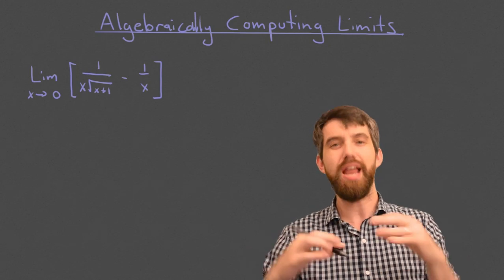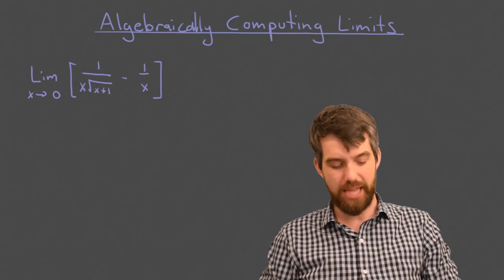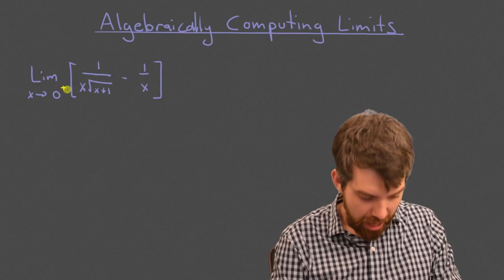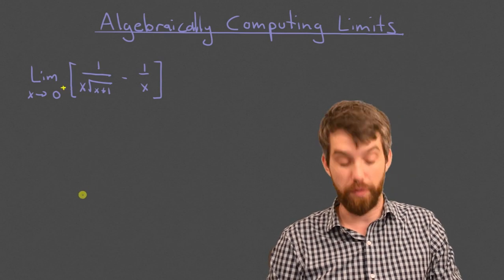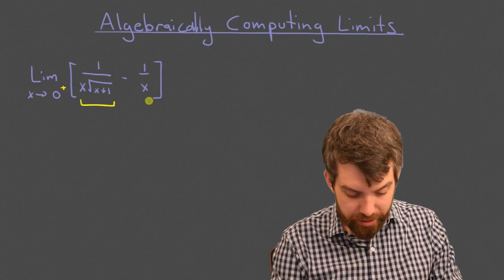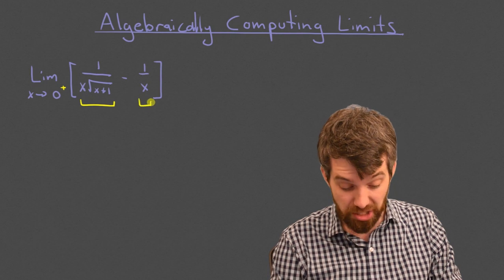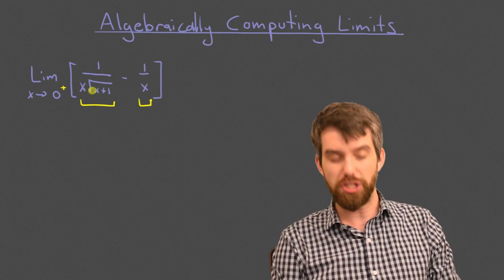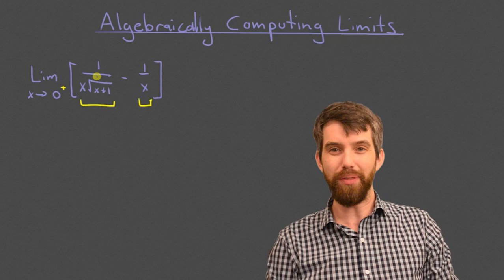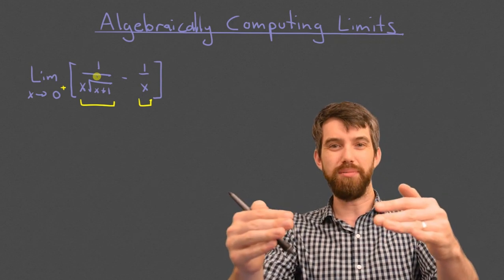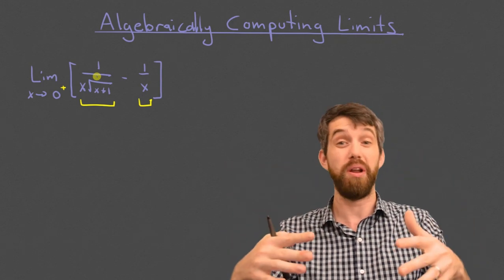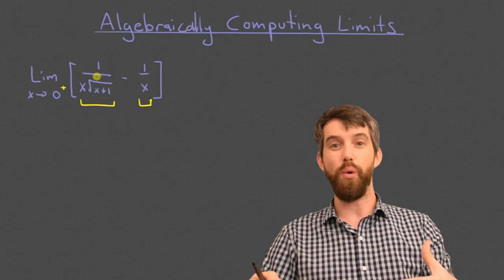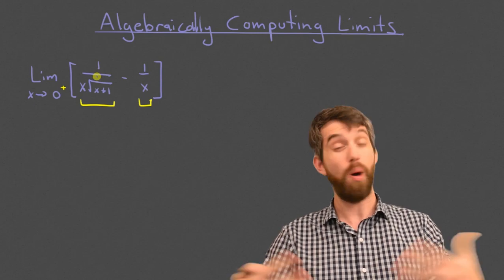Before we get into the formal algebra, I'm going to do a naive approach to guess the answer. I'll focus on taking the limit from the right. We have a difference of two things, and if I look at just the first one, it's 1 divided by 0 from the right, which is going to be positive infinity.